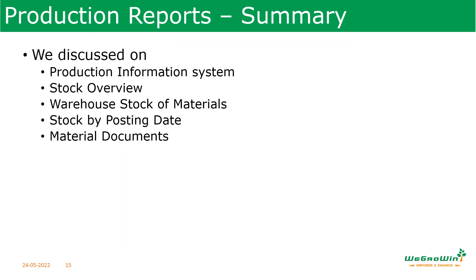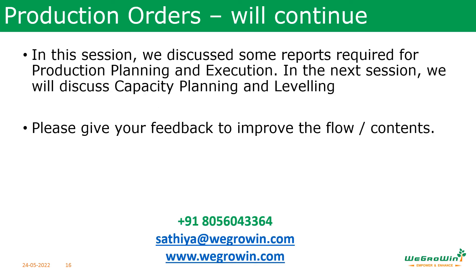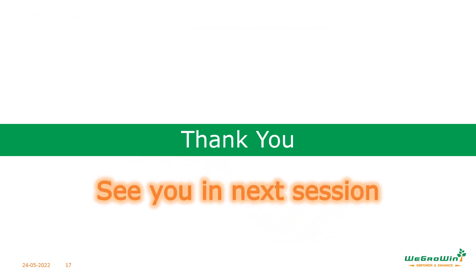In this session, we discussed some reports required for production: the production information system COOIS, stock overview MMBE, warehouse stock details MB52, stock by posting date MB5B, and material document MB51. These are very basic reports, but if you use the proper selection parameters, run them, and save the layouts, they can provide multiple pieces of information required for day-to-day decisions without needing any customized reports. The next session will discuss capacity planning and leveling, a topic requested by many. Please give feedback to improve our content. Thank you — see you in the next session.